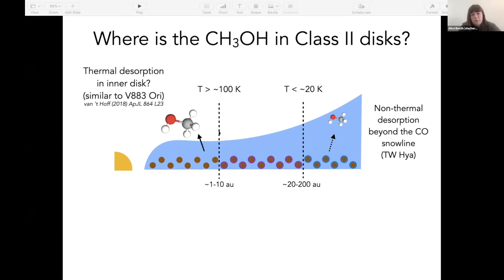What we're interested in is where the methanol in these class 2 disks is. This is a simple cartoon showing a methanol snow line at about 100 Kelvin and CO snow line at 20 Kelvin. In TW Hydra what we see is methanol on the outer disk that's coming off the grains at very low temperatures, so we call this non-thermal desorption, beyond the CO snow line. We'd also expect to see some thermal reservoir methanol in the inner disk similar to what we see in outbursting sources. We might not see this in a disk like 163296 because the dust is optically thick at millimeter wavelengths and that would hide this molecular emission. So do all disks have a reservoir of methanol and we just don't detect it, or do we only have methanol in these cold disks where we're able to form it on the CO ice reservoir?